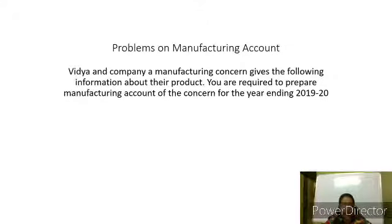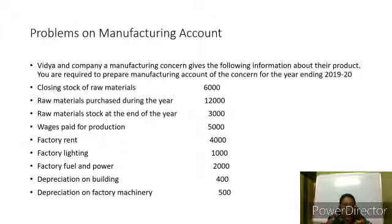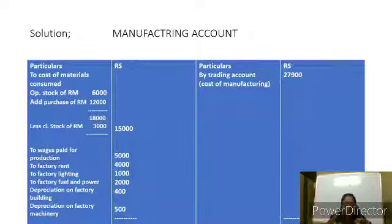This problem is from the C.S.R.M.N. exercise. Vidya and Company, a manufacturing concern, gives the following information about their product. You are required to prepare the manufacturing account for the year ending 2019-20. Closing stock of raw material: 6,000. Raw materials purchased during the year: 12,000. Raw material stock at the end of the year: 3,000. Wages paid for production: 5,000. Factory rent: 4,000. Factory lighting: 1,000. Factory fuel and power: 2,000. Depreciation on building: 400. Depreciation on factory machinery: 500. Based on the format discussed in the previous class, today we shall see how this problem will be solved.